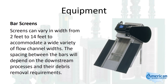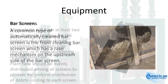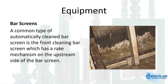Screens can vary in width from 2 feet to 14 feet to accommodate a wide variety of flow channel widths. The spacing between the bars will depend on the downstream processes and their debris removal requirements. Most plants will have at least two flow channels to allow isolation of a screen for corrective maintenance or manual cleaning, and plant flow should be evenly distributed among all screens.